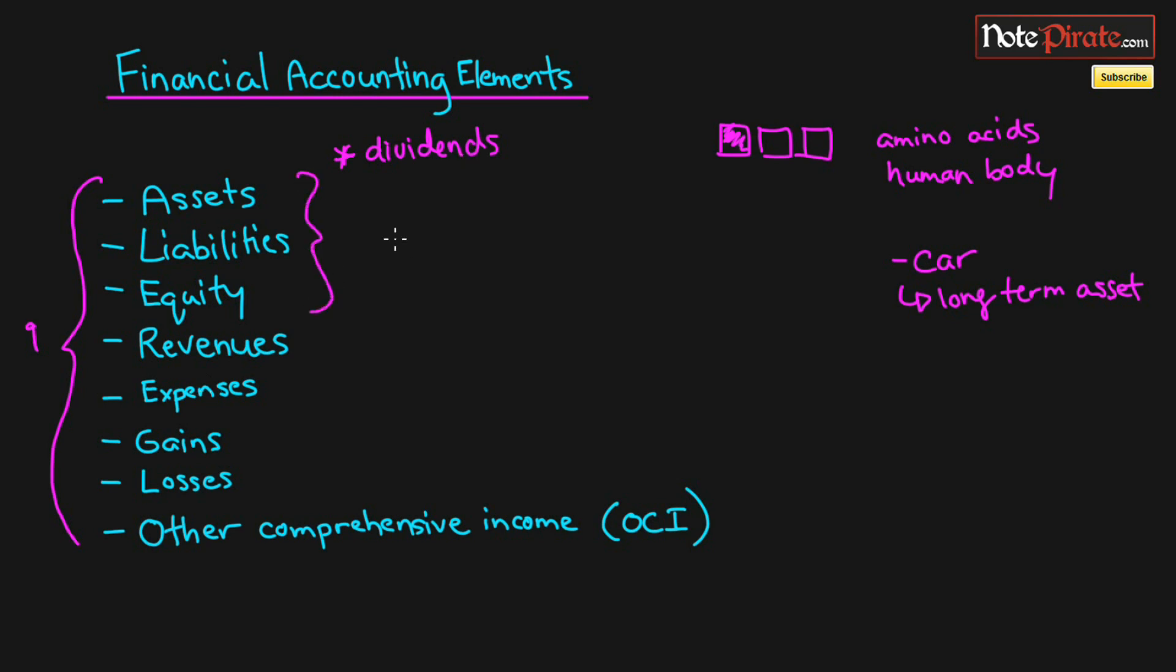What you'll actually notice is that the first three—assets, liabilities, and equity—they show up on the balance sheet. The following four—revenues, expenses, gains, and losses—you're not gonna see on the balance sheet, you're gonna see it somewhere else, and that is on the income statement. While the last one, it's not really important at this point in time, but it shows up on the comprehensive income statement. We won't worry about that for now because I'll talk about that at a much later date.